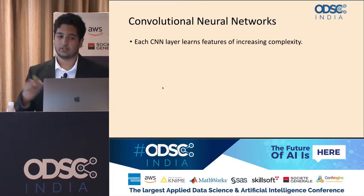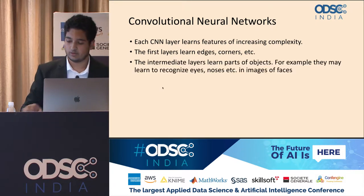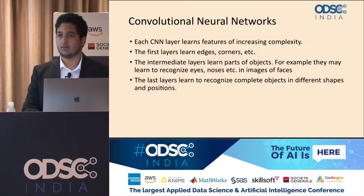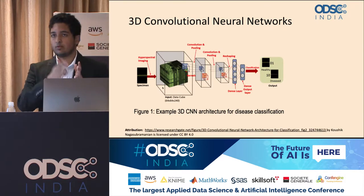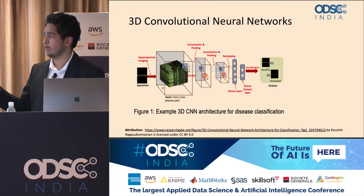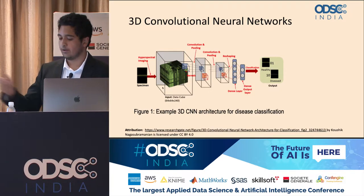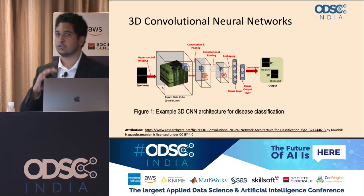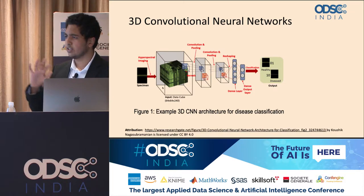Each CNN layer has features of increasing complexity. The first layers learn edges and corners, intermediate layers learn more complex parts of the object like eyes and nose, and the last layers detect full objects such as faces. The CNNs output to a decision layer. 3D CNNs are essentially the same, except the input is a 3D volume and the kernels or filters are also 3D. Instead of detecting 2D features, they detect the same features in 3D, which is critical for lung nodule data since all the data is of a 3D nature.